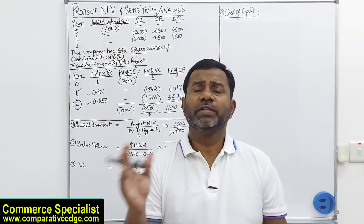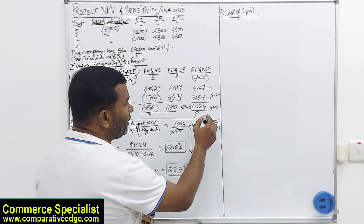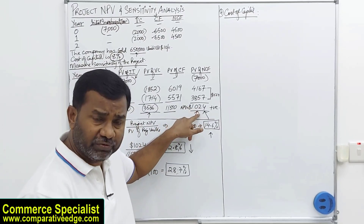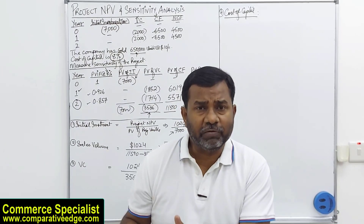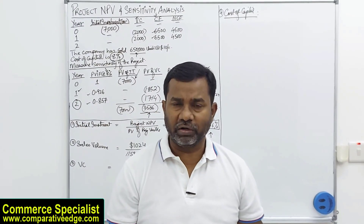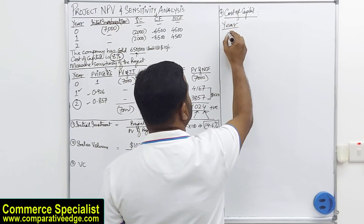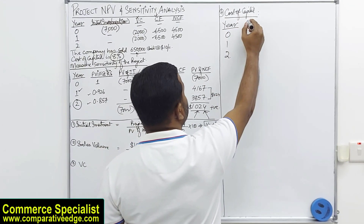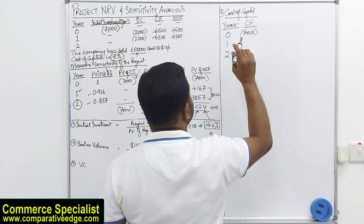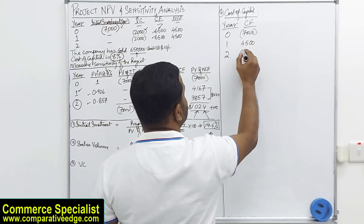I am going to increase the discount rate to 20% and redo the calculation. The cash flows remain: initial investment of 7,000 in year 0 and net cash flows of 4,500 in years 1 and 2. The year-0 discount factor is always 1 regardless of rate. For year 1 at 20%, the present value interest factor is 0.833, and for year 2 it is 0.694.